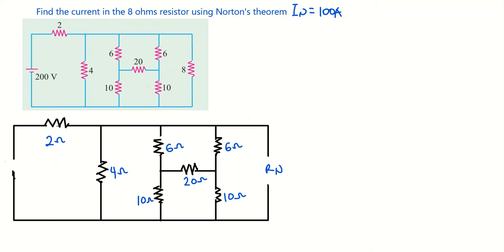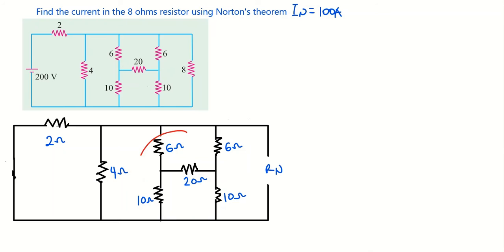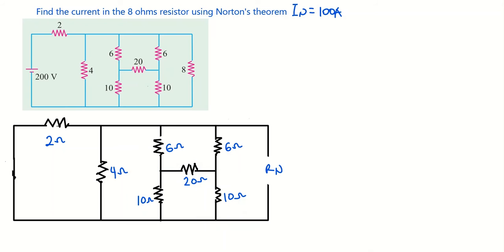With the voltage source short-circuited, let's look at how to find Norton's resistance. Looking at this connection, you can't easily tell which resistors are in series or in parallel. So we'll use a delta-star transformation — changing this delta connection to a star connection will help us find Norton's resistance.